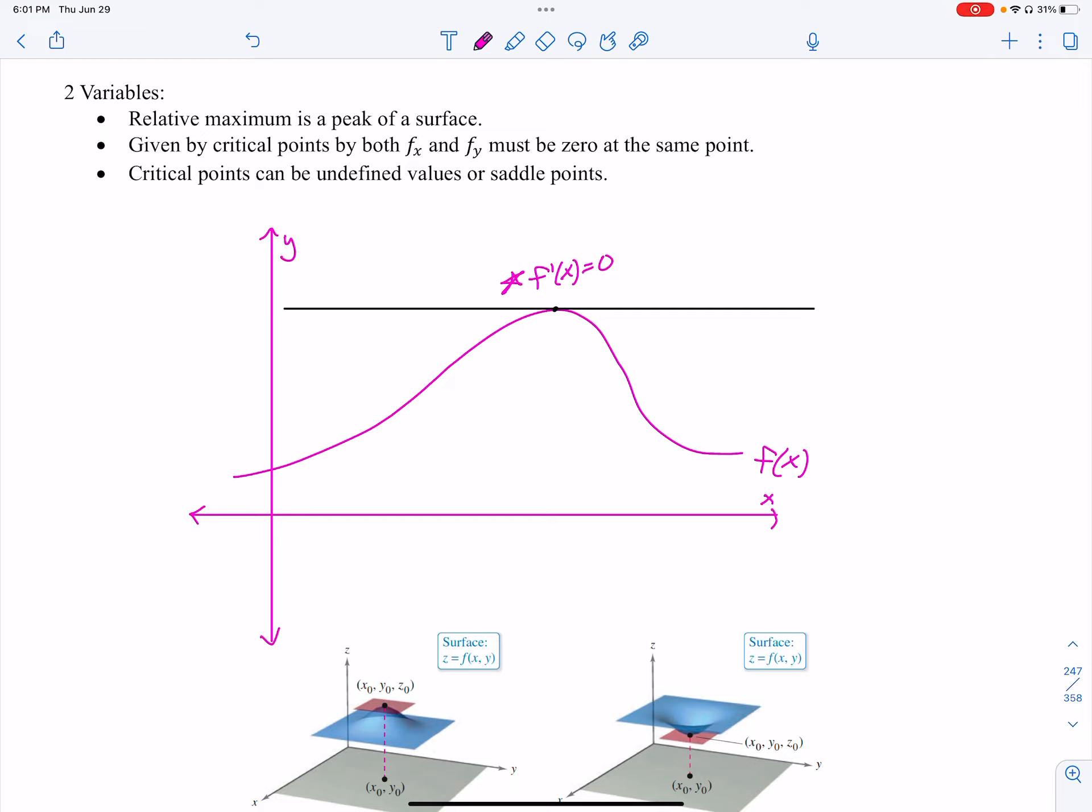Now, we have a couple different things that those can be. It could be an undefined value, right? I mean, it just doesn't exist. Or we have something we call a saddle point.